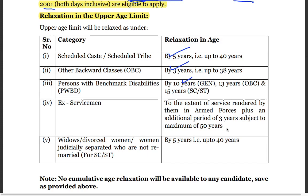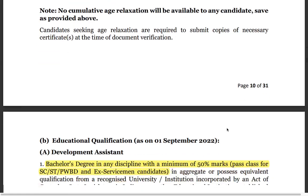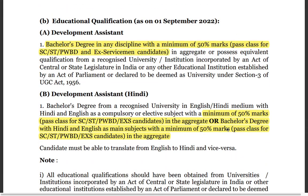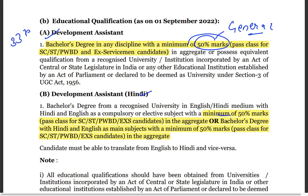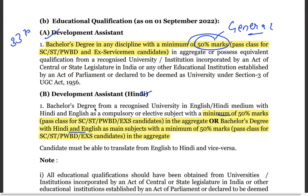There is also relaxation for ex-servicemen, widows, divorced women, and women judicially separated. For Development Assistant, you must have a graduation degree in any discipline — there is no particular discipline requirement. For general category, minimum 50% marks are required. For reserved categories — SC/ST, PwBD, ex-servicemen — pass class is sufficient, meaning if you have passed as per your university standards you can apply. Also, Hindi or English should be a main subject in your degree.